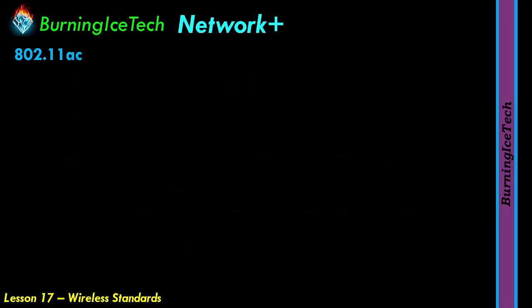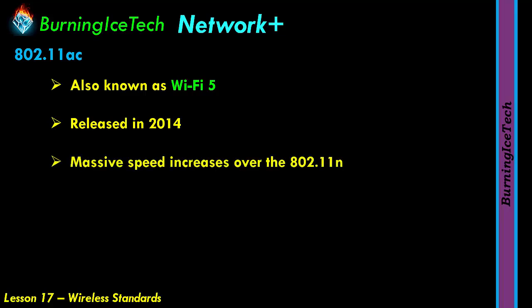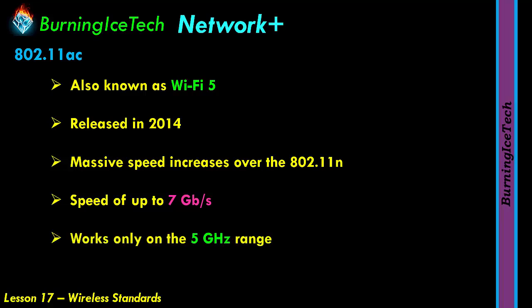We have the fifth one on our list — 802.11ac, also known as Wi-Fi 5. It was released in 2014, about five years after the previous 802.11n standard. The 802.11ac has massive speed increases over 802.11n, coming in at a speed of 7 gigabits per second. This AC standard operates at the frequency of 5 GHz only. There is simply too much interference and noise on the 2.4 GHz frequency, since it's used by so many other things, so these newer standards operate at 5 GHz.